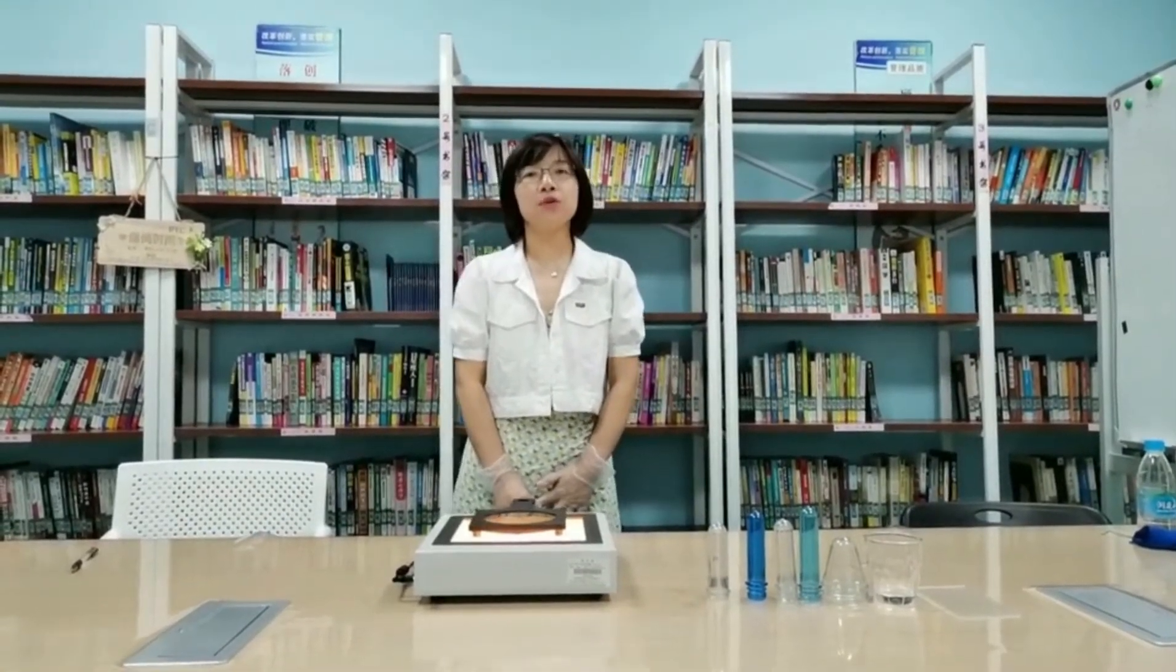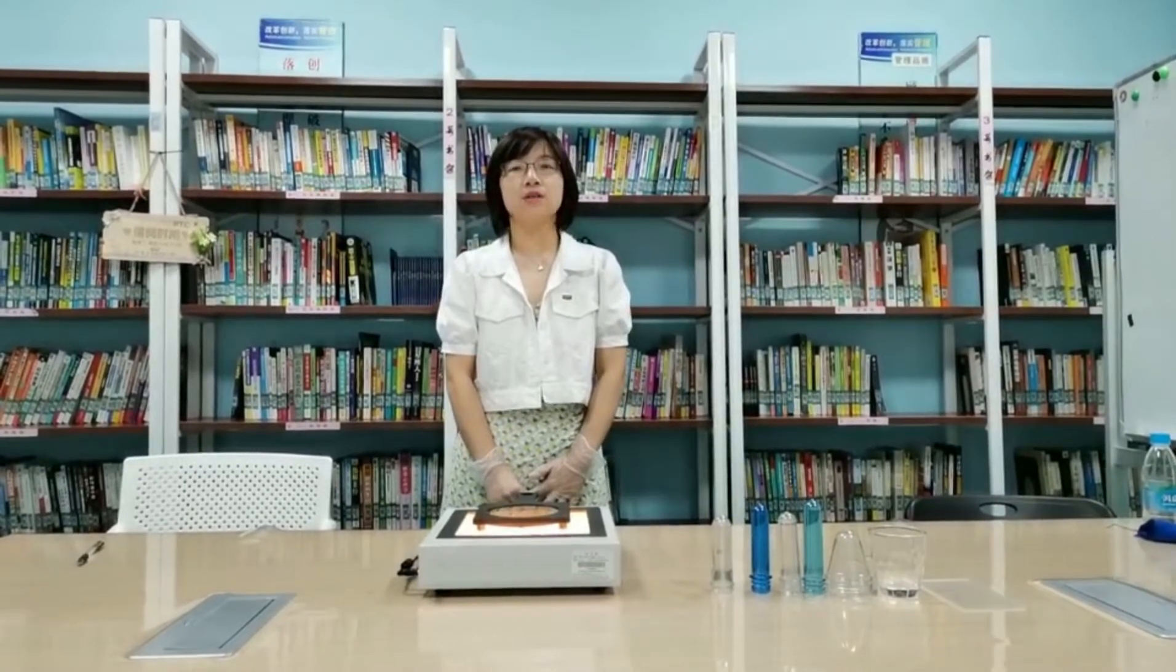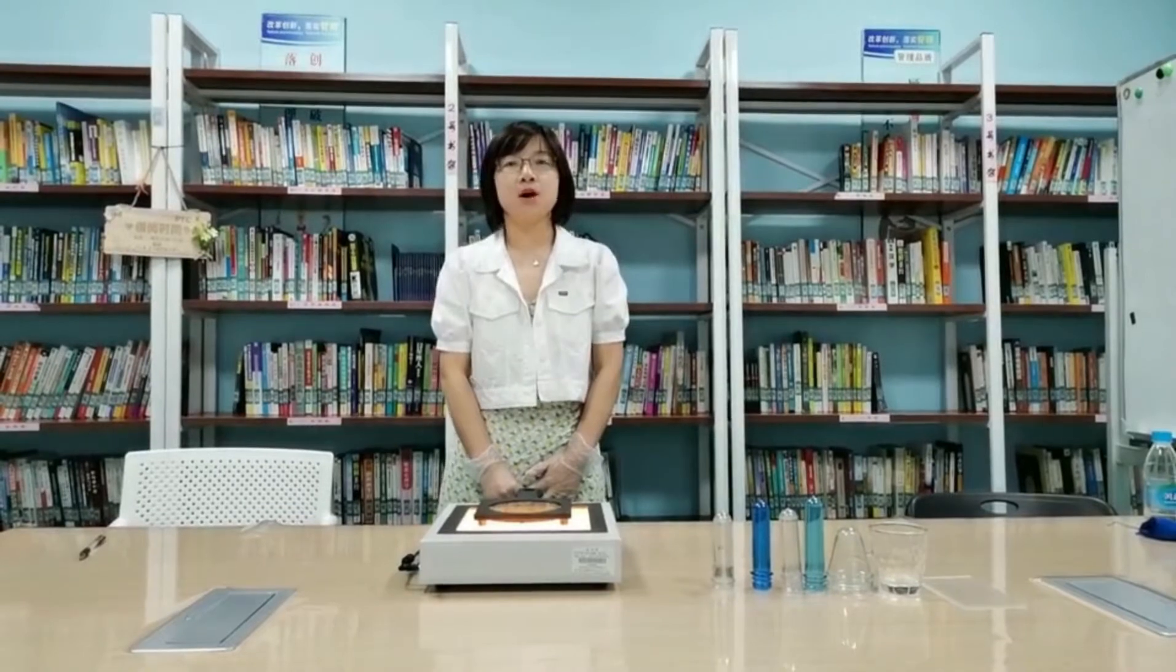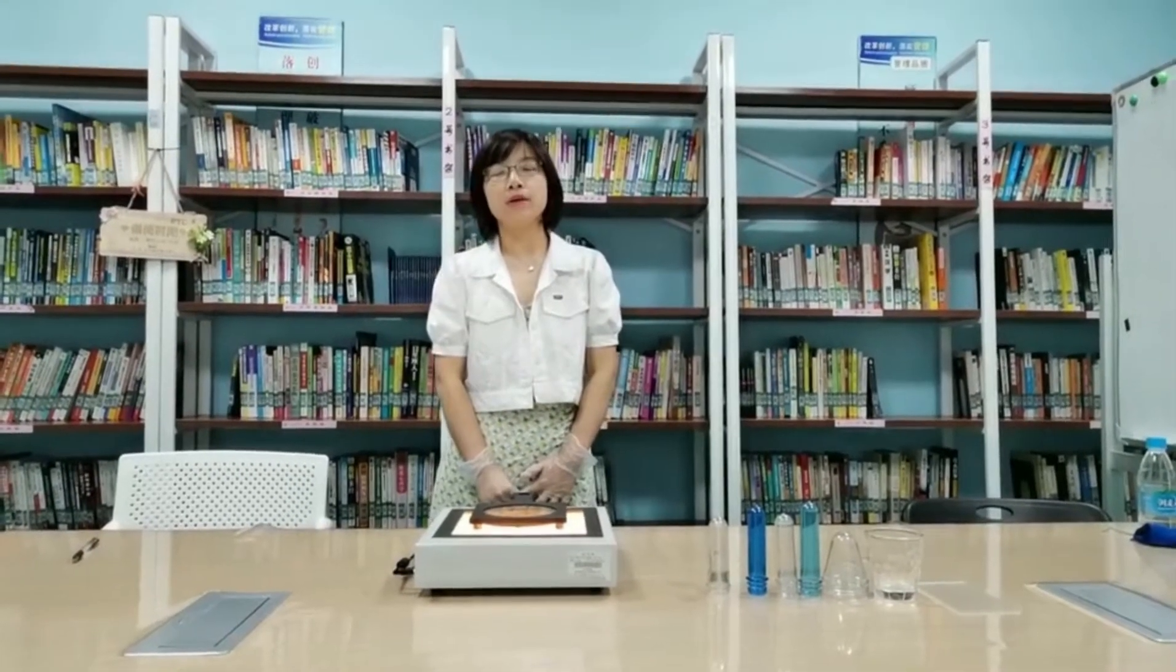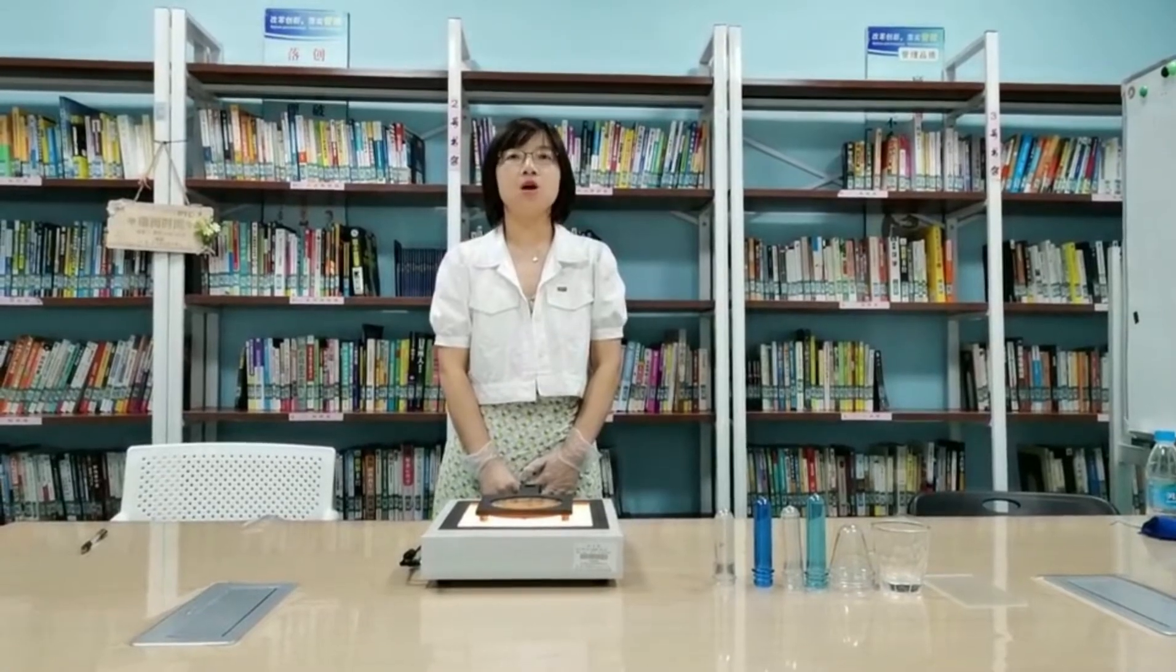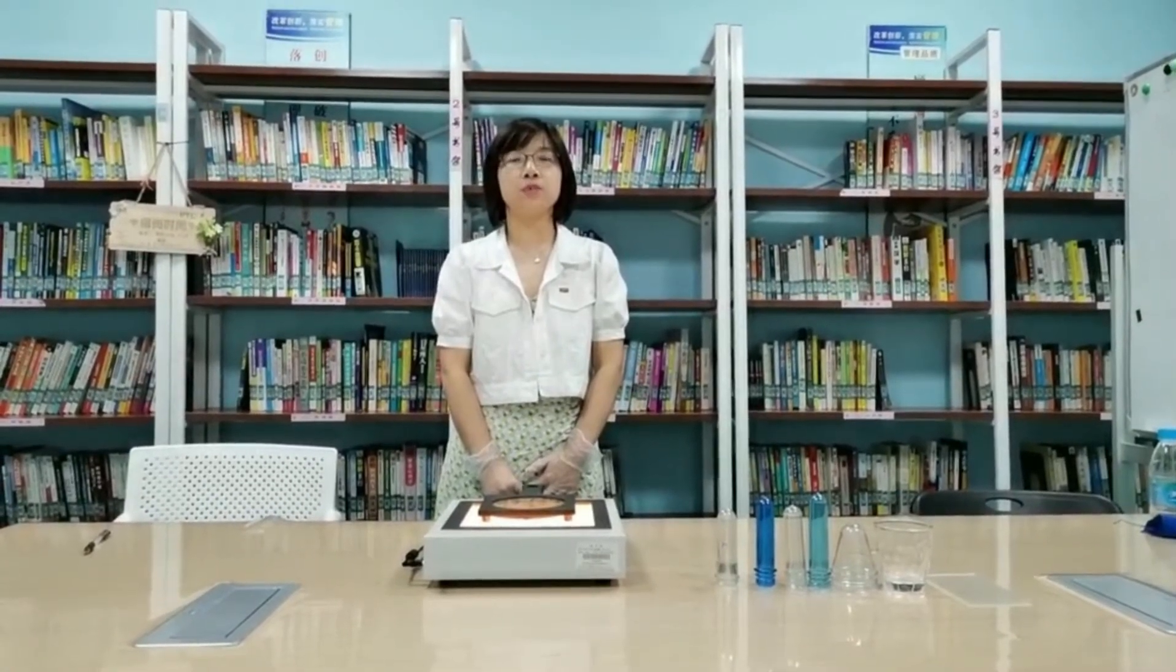In the previous videos, we learned a lot about benchtop polariscopes and strain fringes. They are widely used in the quality control of glass products and transparent molding parts such as preforms.